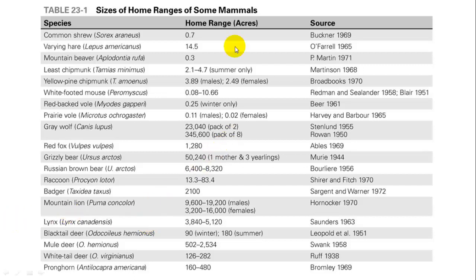Here is a list from the textbook showing home ranges across a range of mammal species. The common shrew, a very small mammal, has a very small home range. The grizzly bear, on the other hand, needs 50,000 acres for a mother and three yearlings. Grizzly bears don't live in highly productive areas, so they need a large area in order to diversify their diets and get enough energy to survive.